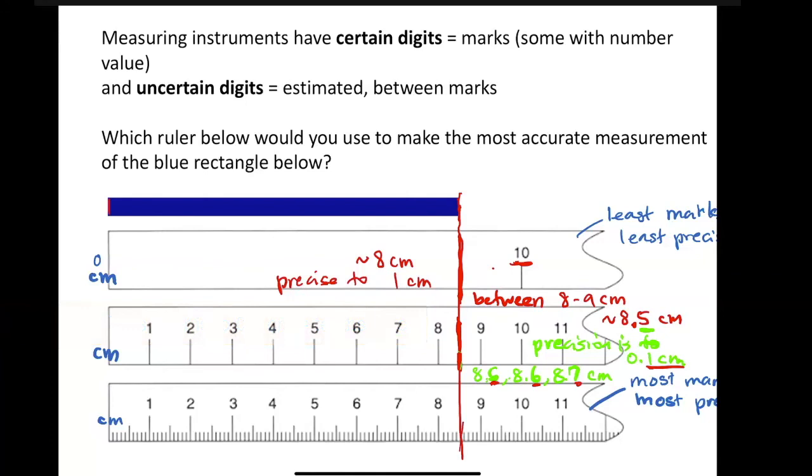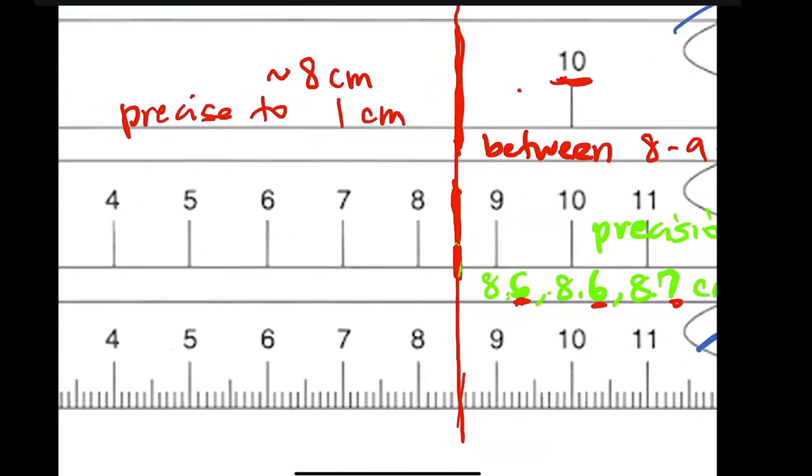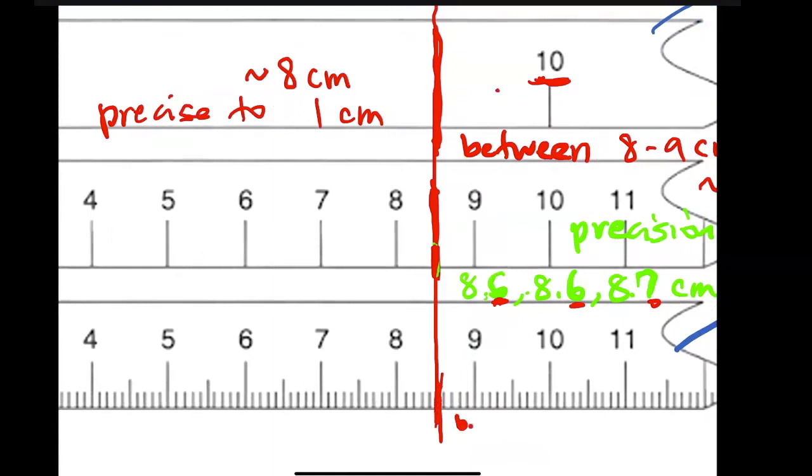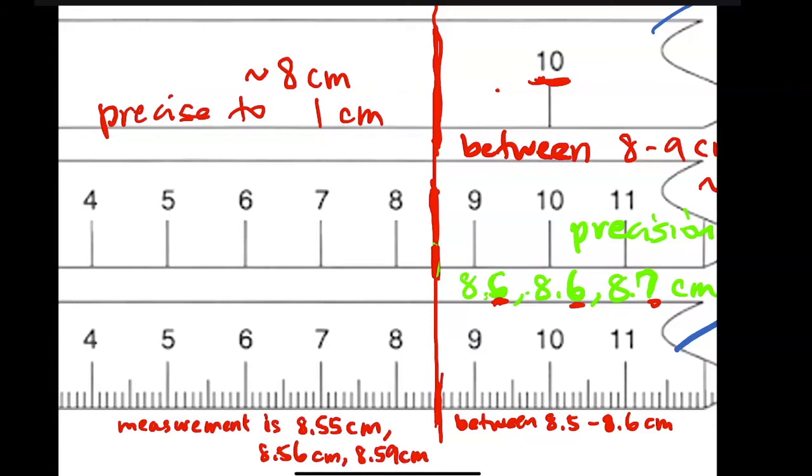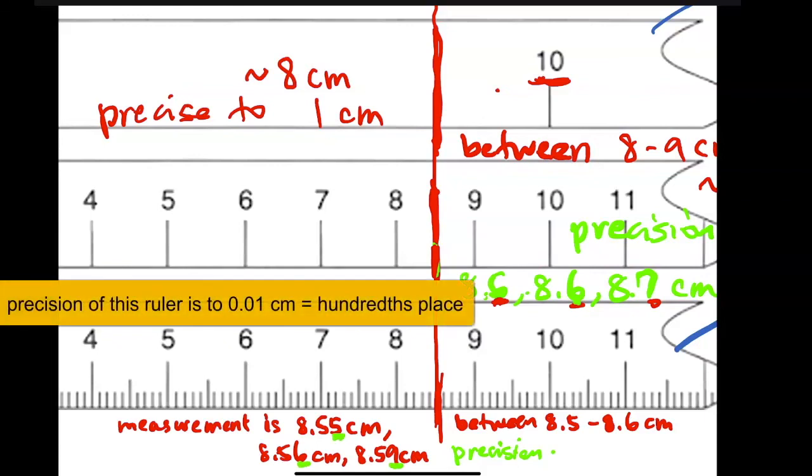For this ruler down here, this has the most marks and it's the most precise. Zooming in a little bit more, you can see that this red mark falls in between 8.5 and 8.6. So that adds another level in which you could say the measurement is between there, adding another level, the hundredths place. It could be 8.55 centimeters or 8.56 centimeters or 8.59 centimeters, depends on what you estimate is that uncertain in between. And so here then the precision is not just one decimal place out like the last ruler was, but two decimal places out. What's changing is that two decimal places out or 0.01 centimeters, two decimal places out or the hundredths place.